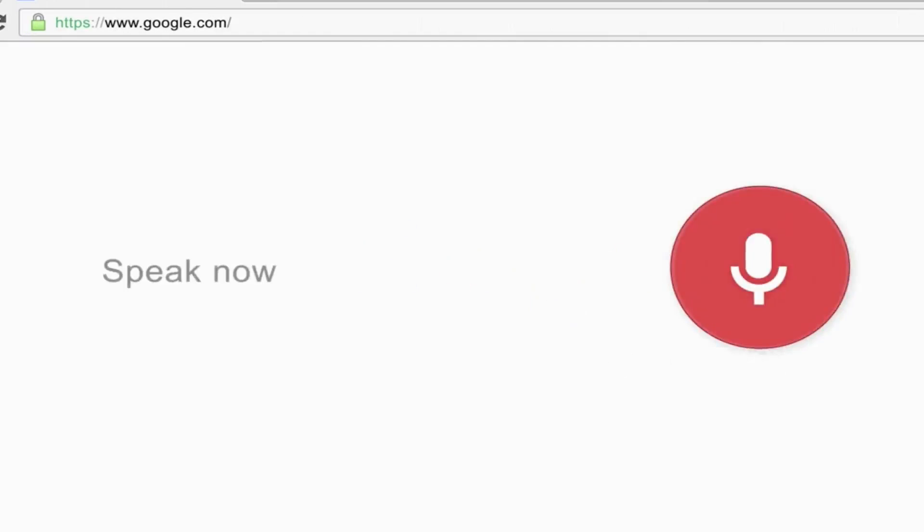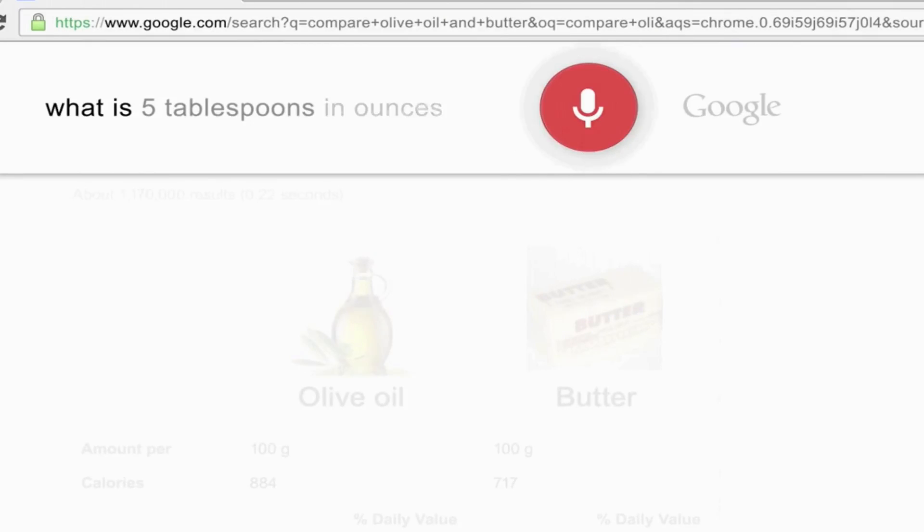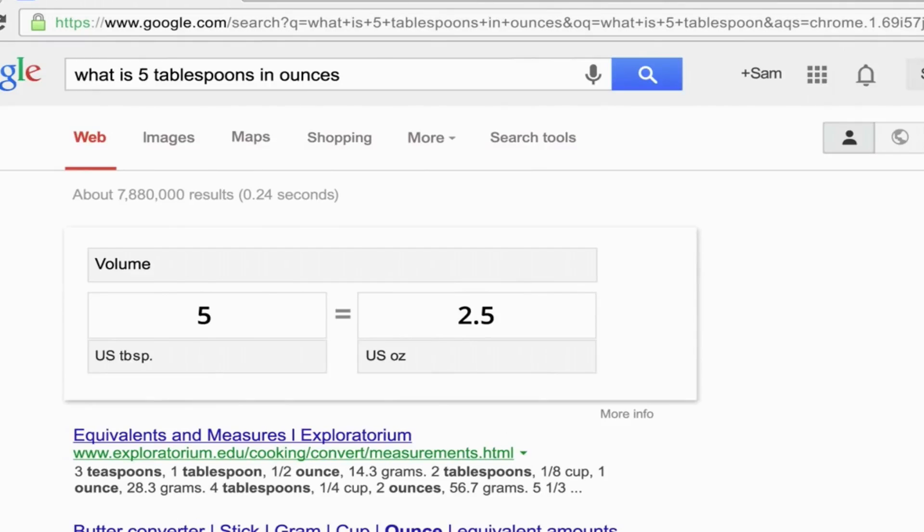Okay, Google, compare olive oil and butter. Here is a comparison of olive oil and butter. Okay, Google, what is 5 tablespoons in ounces? 5 US tablespoons is 2.5 US fluid ounces.